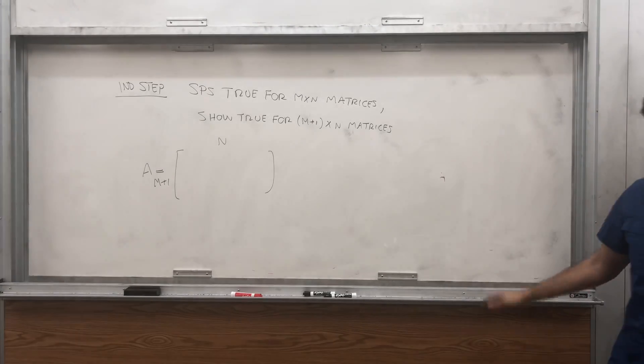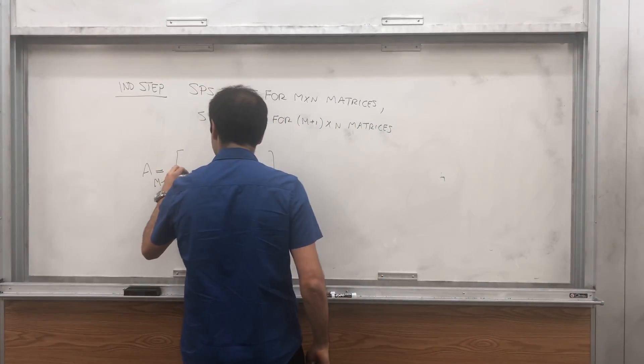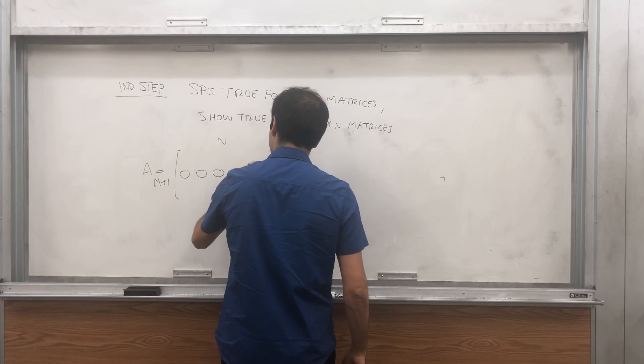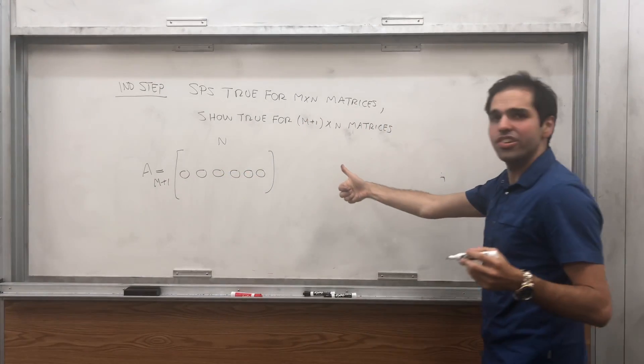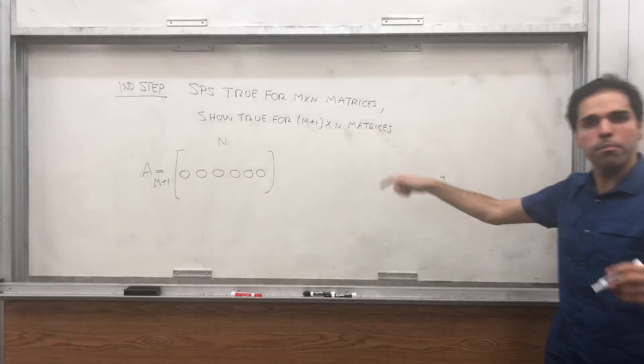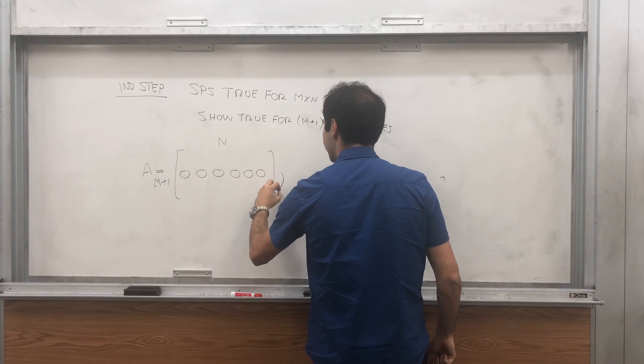So suppose A is a matrix with n plus 1 rows and n columns. First of all, if there's any row of zeros,